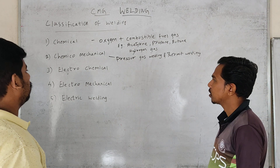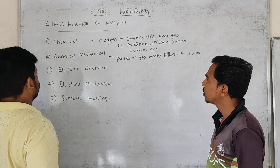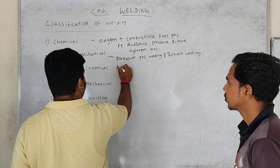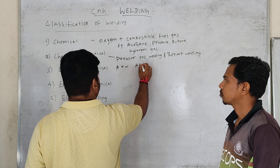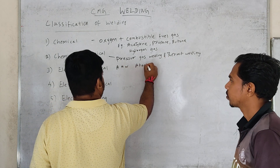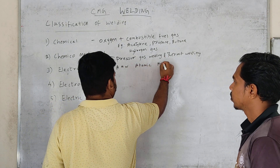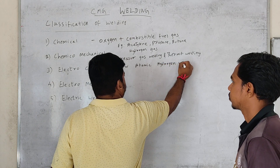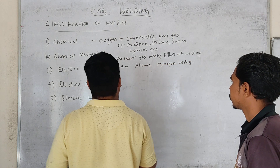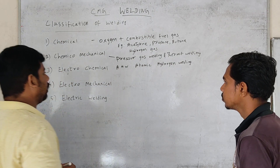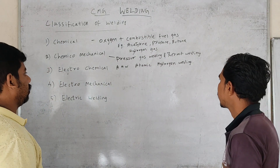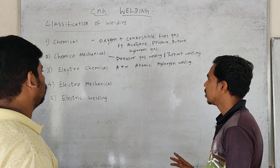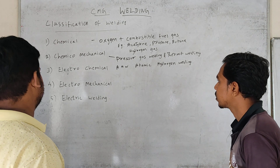Let's see what is electrochemical welding. Electrochemical welding is used in electrical gas, specifically atomic hydrogen welding, which combines electrical energy and chemical energy.